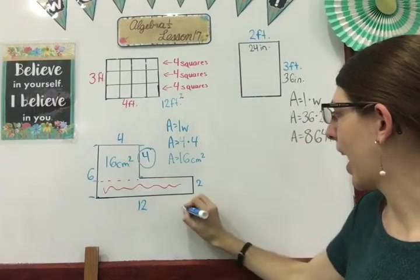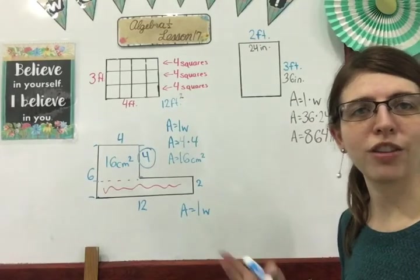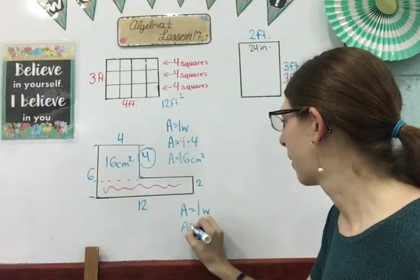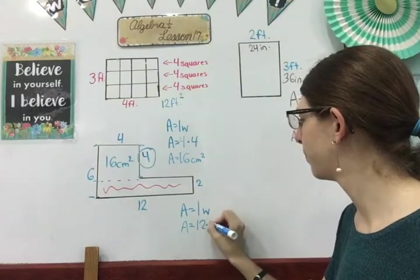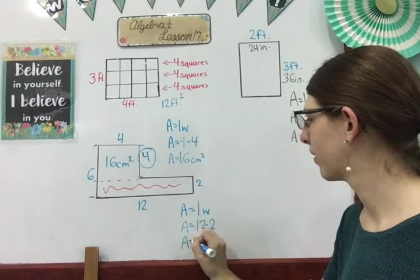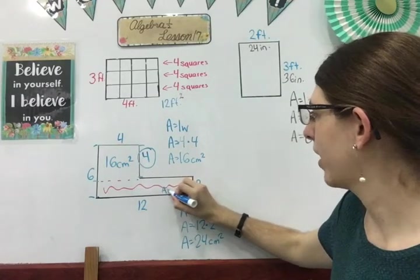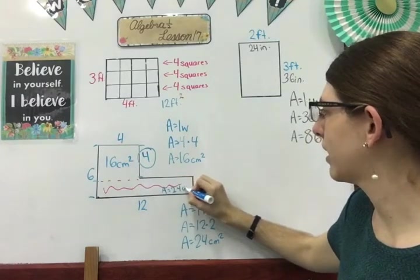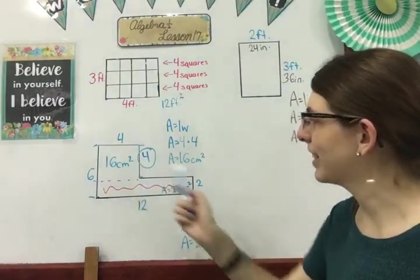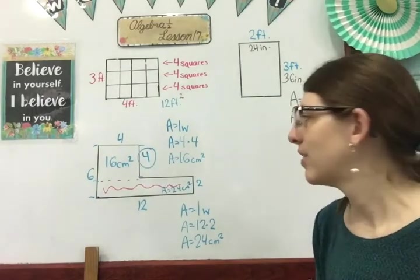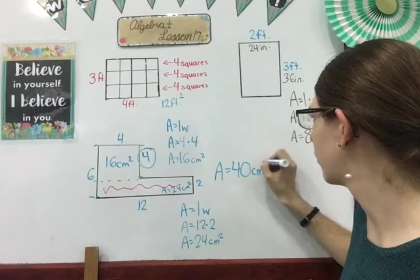Down here, I have same formula, length times width. We can just stick the letters right next to each other. That means multiplication. My length is 12 and my width is two. 12 times 2 equals 24 centimeters squared. So area equals 24 centimeters squared. I'm not quite done yet because I need to find the total area. So I have to add this 16 to the 24. So my 16 plus 24 gives me a total area of 40 centimeters squared.